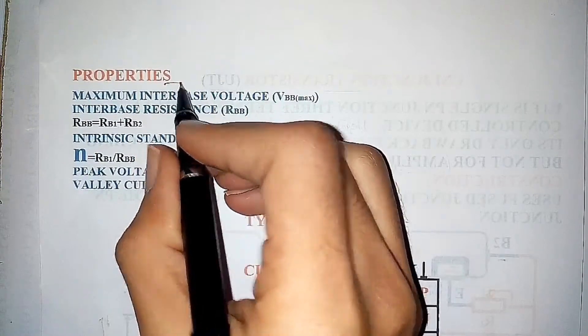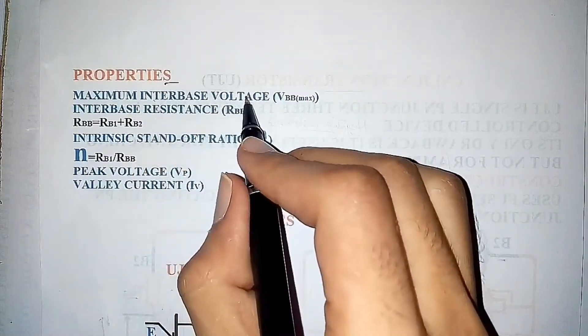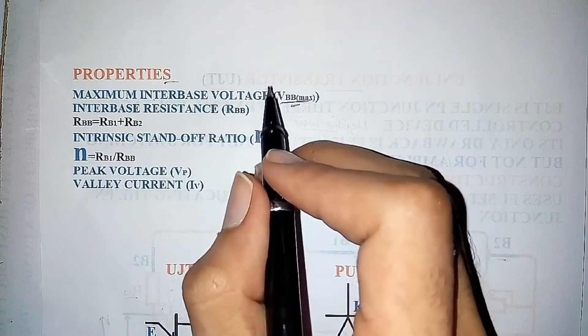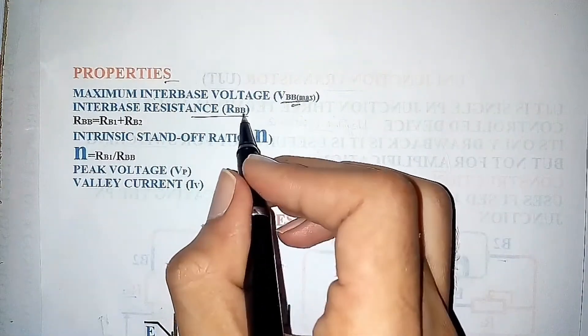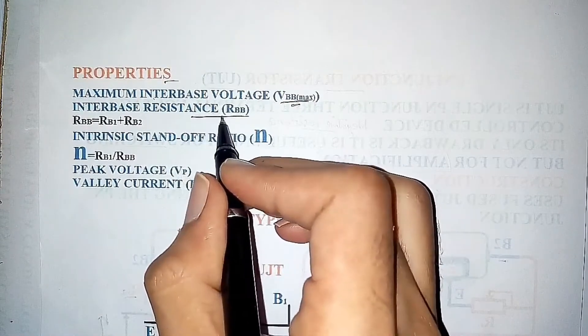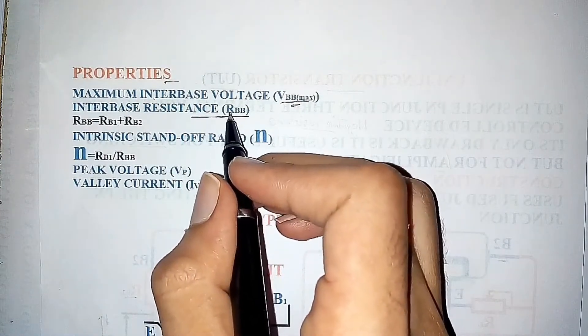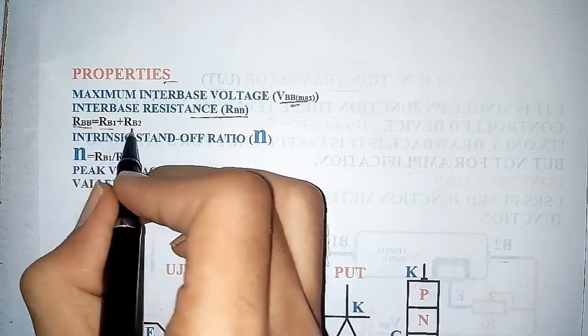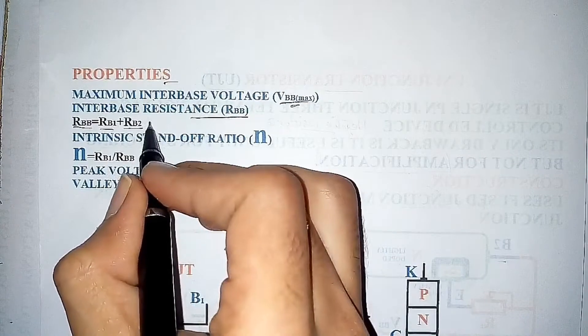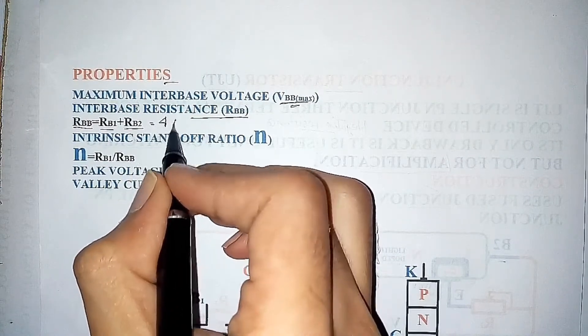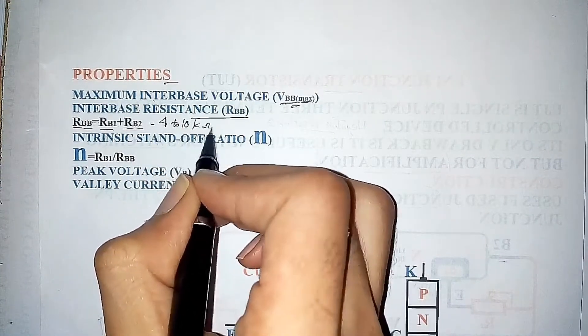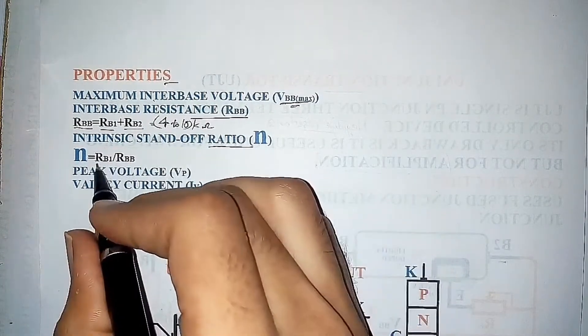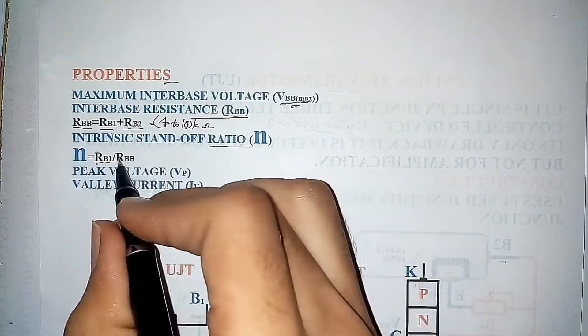Moving on to properties of UJT. The maximum interbase voltage is the maximum voltage across interbase resistance value. So, RBB is equal to RB1 plus RB2, which is generally in the range of 4 to 10 kilohms. Intrinsic standoff ratio is the ratio of RB1 to the total interbase resistance RBB.